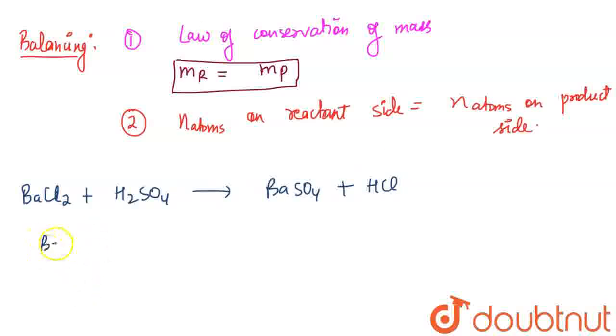If I talk about both sides, on the reactant side and the product side, barium is one atom on each side. This is the reactant side and this is the product side.